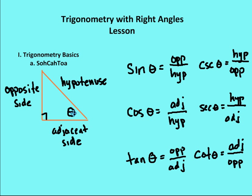So if this is my reference angle, then the adjacent side is going to be the side that's right next to the angle. My opposite side is going to be the side that's opposite the angle in question, or theta. And then my hypotenuse is the hypotenuse.